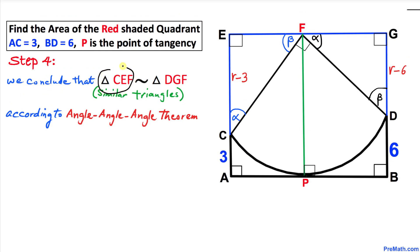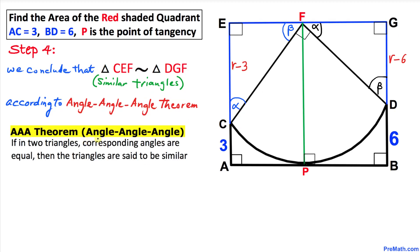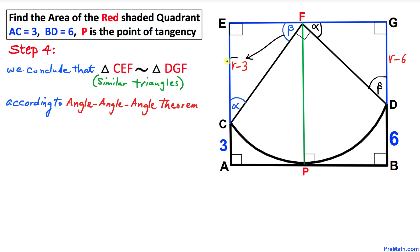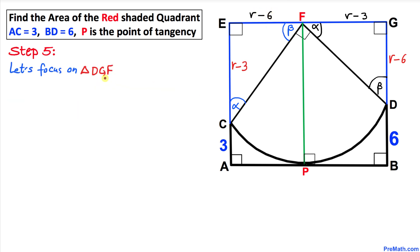We conclude that triangle CEF and triangle DGF are similar triangles by the Angle-Angle theorem: if in two triangles corresponding angles are equal, the triangles are similar. The opposite side of angle beta is r minus 3, so the corresponding side in triangle DGF is also r minus 3. The opposite side of angle alpha is r minus 6, so the corresponding side is r minus 6.